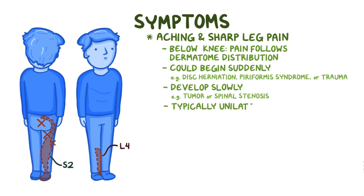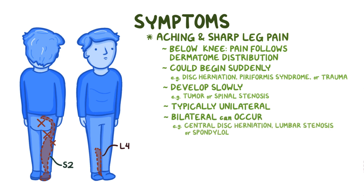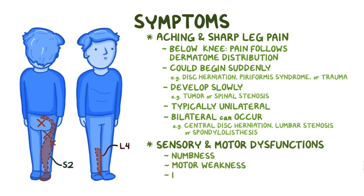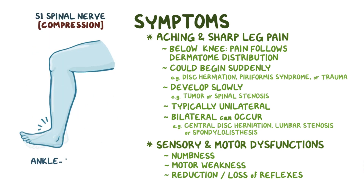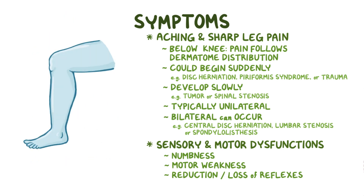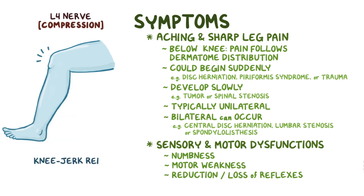Sciatic pain is typically unilateral, meaning it's only located on one side. Bilateral sciatica, where both legs are affected, can occur with central disc herniation, lumbar stenosis, or spondylolisthesis. Sometimes the pain can be accompanied by other sensory or motor dysfunctions like numbness, motor weakness, and reduction or loss of reflexes. S1 spinal nerve compression affects the ankle jerk reflex, while L4 nerve compression affects the knee jerk reflex.